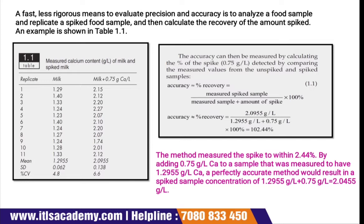Let's see this table showing how accuracy is performed. In this example, we have taken skimmed milk and measured the calcium content. Calcium is the main ingredient in milk. We took 11 replicate samples of milk. The accuracy can be measured by calculating the percent of the spike — that is 0.75 mg per liter — using the formula: measured spiked sample divided by (measured sample plus amount of spike), multiplied by 100 percent. This result tells us how much accuracy that particular experiment has.